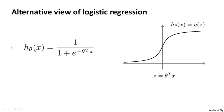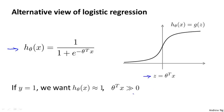So in logistic regression, we have our familiar form of the hypothesis and the sigmoid activation function. I'm going to use z to denote theta transpose x. Now let's think about what we would like logistic regression to do. If we have an example with y equals 1 — meaning an example in the training set, test set, or cross-validation set — then we're hoping that h of x will be close to 1, so we correctly classify that example.